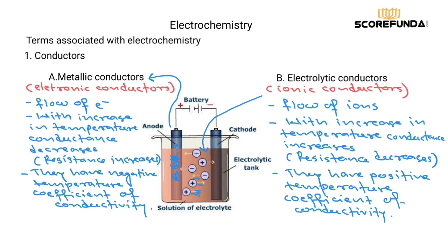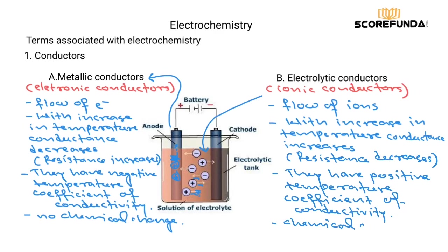Another important point: when we talk about metallic conductors, there is a flow of electrons but there is no chemical change. However, ionic or electrolytic conductors involve ionic substances or those substances which can furnish ions, and there is a chemical change. So there has to be a chemical change in electrolytic conductors. This was our first term associated with electrochemistry — conductors.